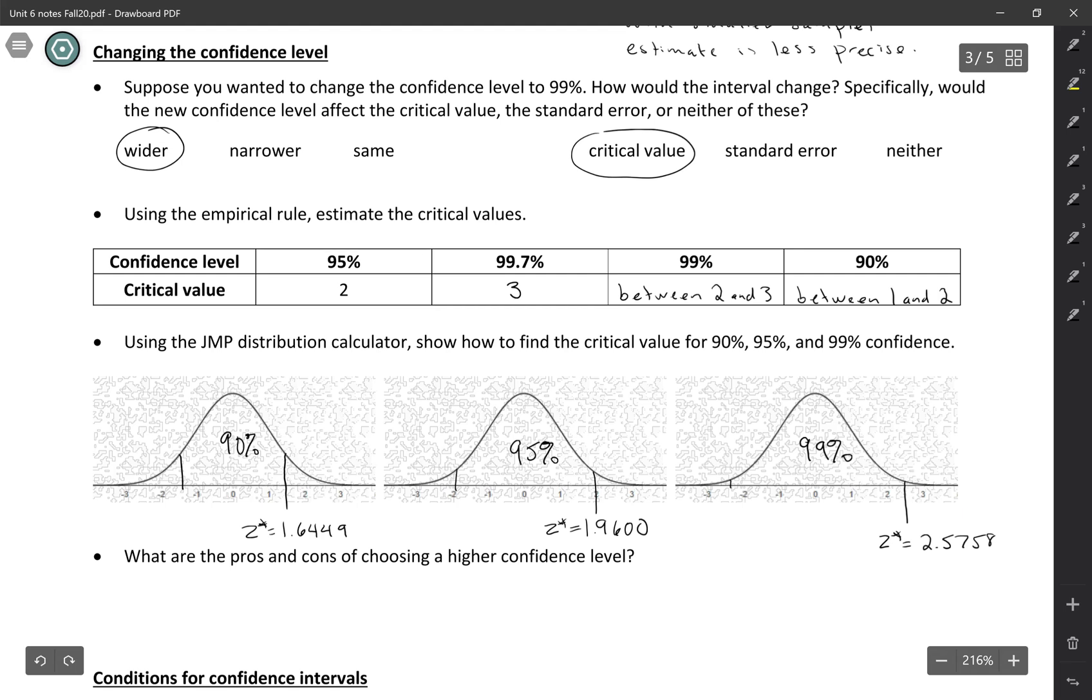So when you plug in 99% into the JMP calculator, you should get a Z star value of 2.5758.